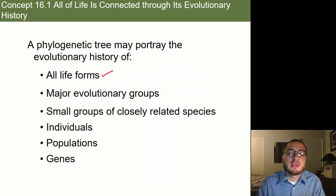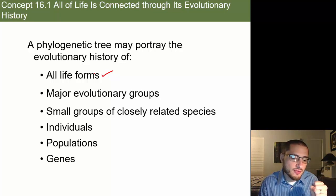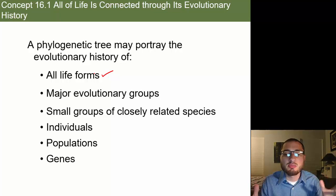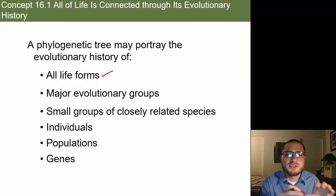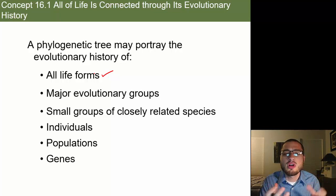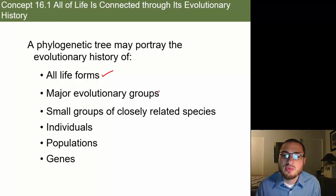A phylogenetic tree may portray the evolutionary history of all life forms. They call it the tree of life, which tries to show all life forms and how they started from the same common ancestor to all living things, branching off into things no longer alive and things alive today. But we can home in on more specific lineages and look at just major evolutionary groups or small groups of closely related species.